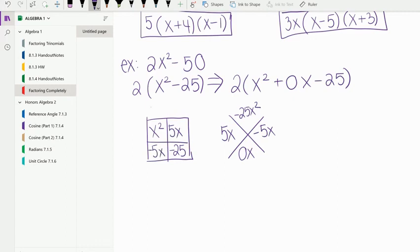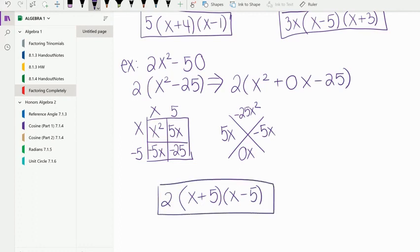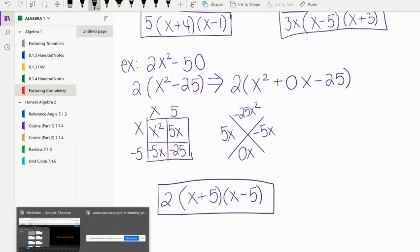The GCF of x squared and negative 5x is x. x times x is x squared. x times 5 is 5x. x times negative 5 is negative 5x. And 5 times negative 5 is negative 25. So our final answer, we would write x plus 5, x minus 5, but don't forget that 2 that goes in the front that we have to write. That is it.